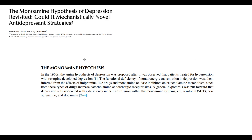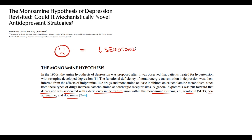Up to this day we treat depression according to monoamine theory. We believe that depression is caused by deficiency of neurotransmission, which can be caused by low levels of serotonin and norepinephrine, and to a lesser extent dopamine, in the synapse. So we believe that depression is caused by a decreasing amount of serotonin and norepinephrine in the synapse.